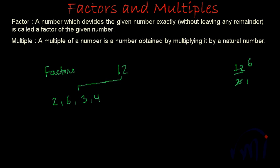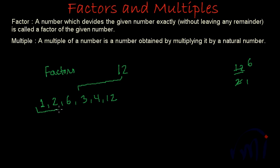And one more thing: 1 is the factor of every number. So 1 will be a factor, and the number itself is also a factor of its own. 12 divides 12 one time. So 1 and 12 will also be factors of 12. In this way we found that 1, 2, 6, 3, 4 and 12 are the factors of 12.